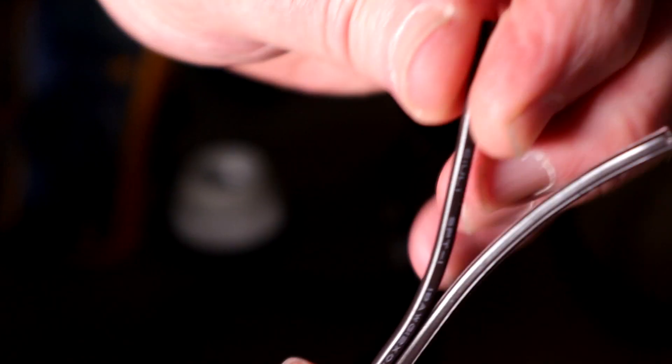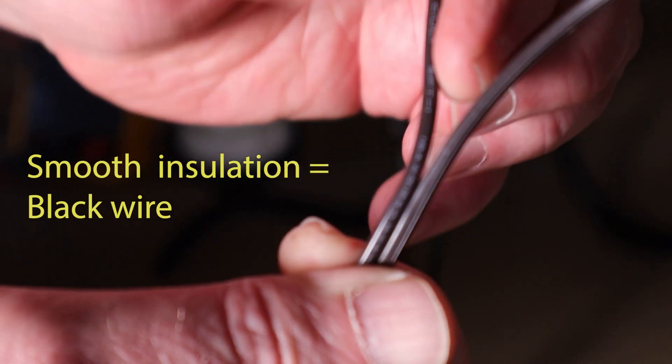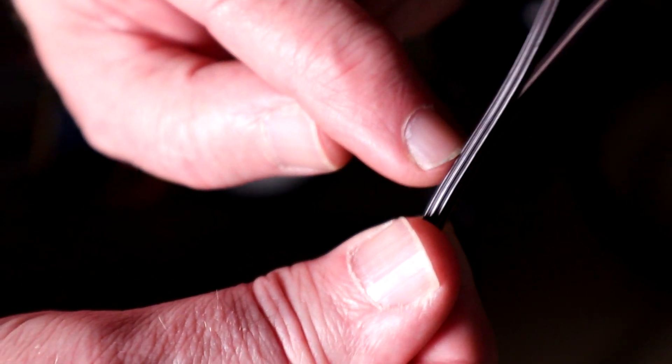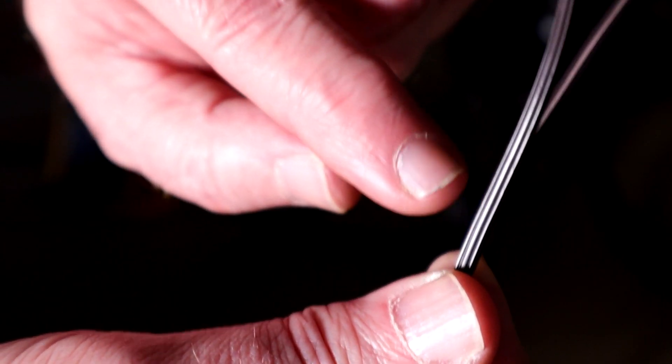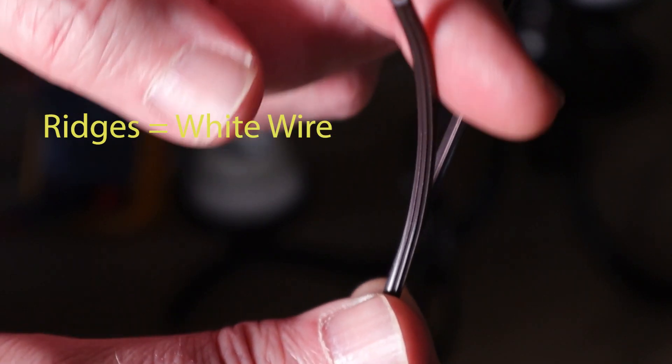What you're going to do is put the smooth wire on your black conductor and the one with ribs, if you can see these ribs here, and you can feel them too. Those ribs identify the conductor that goes on the white wire.